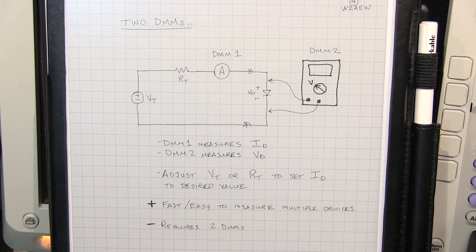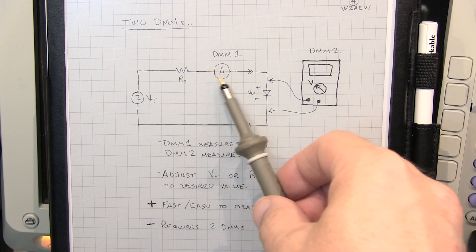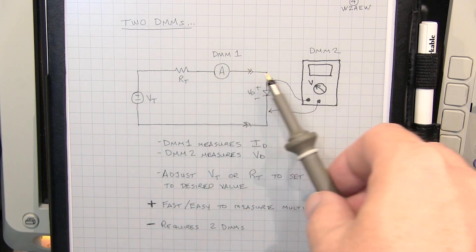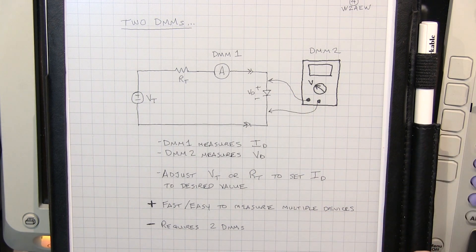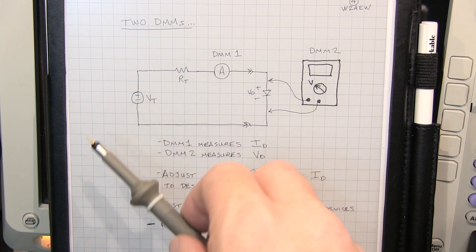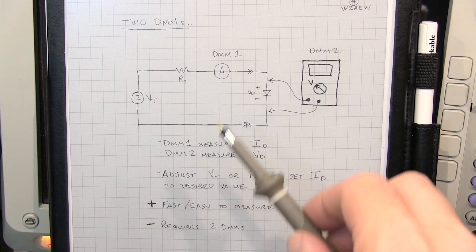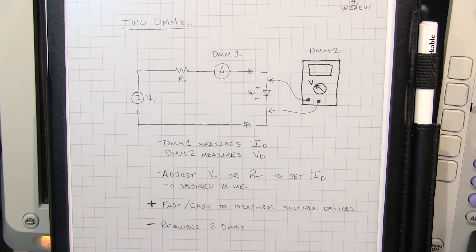Now of course if you have two multimeters available, you can eliminate the need to compute the desired test current by simply measuring it directly. Use one meter as an ammeter in series with your resistor and power supply, and the other simply as a voltmeter across the diode. So now each time you put a new diode in, you can make a minor adjustment to the power supply, or maybe a potentiometer being used for the resistor to set the current to be the same for each diode that you put in there, and get a very precise match at that particular test current. Fast and easy to measure multiple devices, no computations necessary. The downside is obviously that it requires two multimeters.